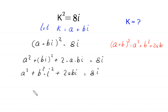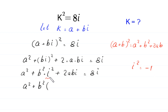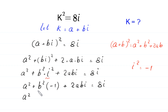Next, a squared plus b i whole squared becomes b squared times i squared plus 2abi equals 8i. Since i squared is equal to negative 1, we replace i squared with negative 1, giving us a squared plus b squared times negative 1, which is negative b squared, plus 2abi equals 8i.